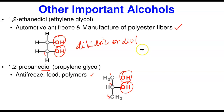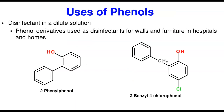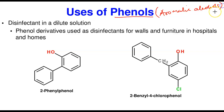Now we turn to phenols. Phenol is the aromatic alcohol, and we will look at the uses of a few phenols. Generally, most phenol derivatives are used as disinfectants in dilute solution — for cleaning surfaces in households, hospitals, schools, and homes. This has become especially important during COVID-19.